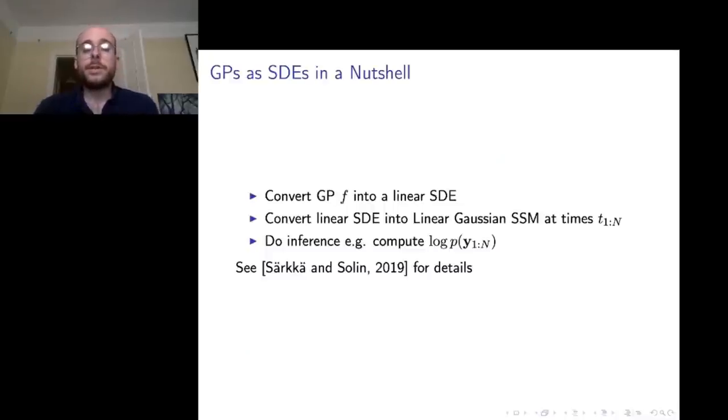One approach to scaling GPs that works well for time series is to convert them into either exactly or approximately into linear stochastic differential equations, SDEs. Once you've done that, various inference tasks become much more straightforward. In particular, to compute the log probability of a collection of observations becomes linear in the number of observations and boils down to essentially doing Kalman filtering.